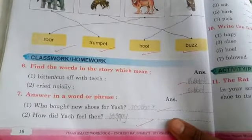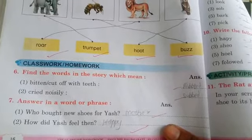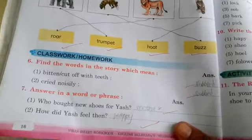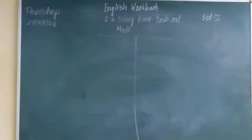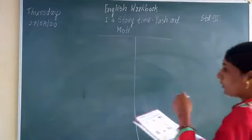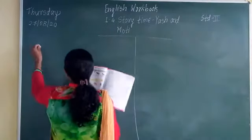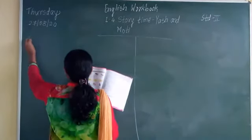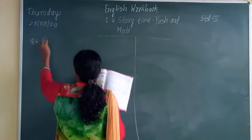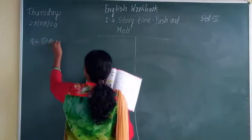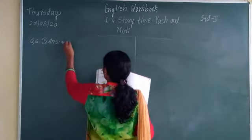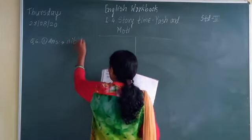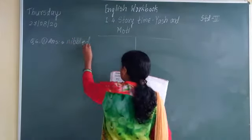The next question is question number six: find the words in the story which mean — first one: 'bitten, cut off with teeth.' What is the word when something is cut off with teeth? The answer is 'nibbled.' It is called nibbled.